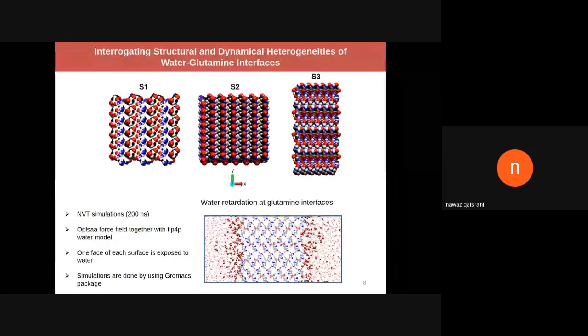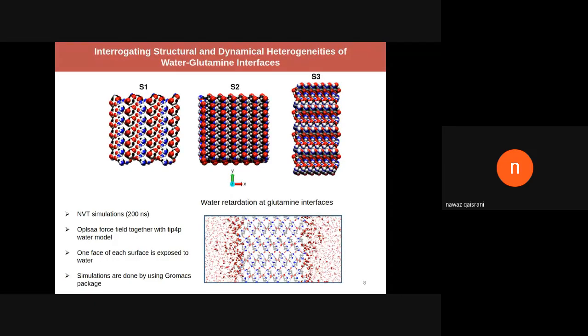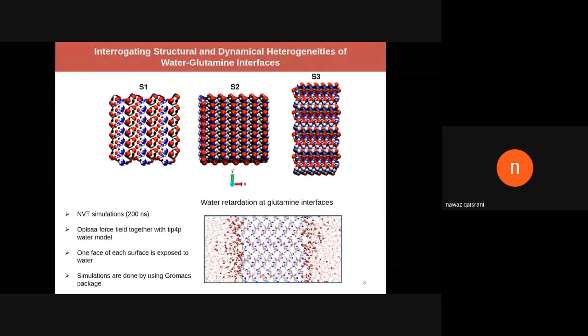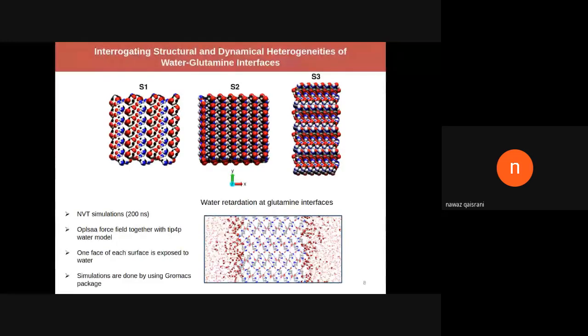We use glutamine surfaces by periodically repeating the unit cell of glutamine in three different directions to generate three different surfaces. We expose one face of the glutamine to water and run long simulations using the GROMACS package to understand how these different surfaces, which differ in chemical nature and geometry, alter the structure and dynamics of water.